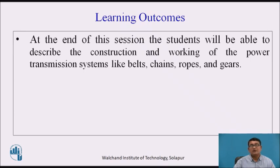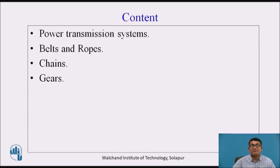So these are the different types of power transmission systems. The contents are: power transmission systems — first, belt and ropes; second, chains; third, gears.